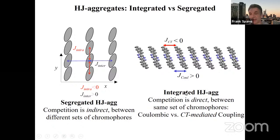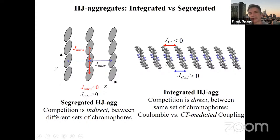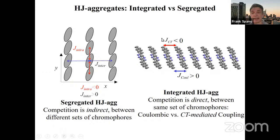What I really want to focus on today is another kind of HJ aggregate, which I call integrated HJ, because the competition is direct — between the same set of chromophores. If you try to understand this Coulombically, you'd say there's only one interaction between two molecules. But if I look closely at the types of interactions in pi-stacks, I can identify two major contributions: the old-fashioned Coulomb coupling that Kasha would have liked, and because there's wave-function overlap between nearest neighbors, a CT (charge-transfer) mediated coupling. The interference between H and J happens between these two distinct types of couplings — Coulombic (long-range, one over R cubed) and wave-function or CT-mediated coupling (short-range). They can oppose each other and give you HJ aggregates.